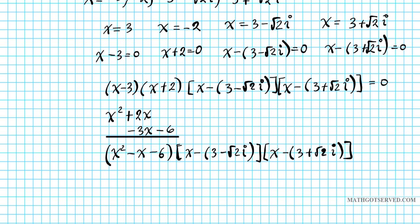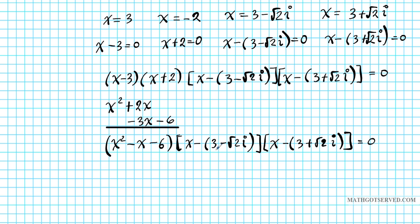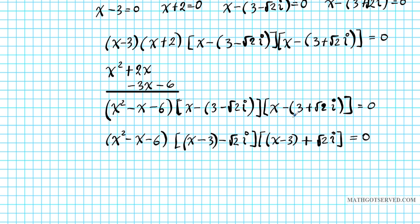So the first thing we're going to do is rewrite these two factors here with the complex radical. How am I going to write these two factors here? Well, instead of X minus this quantity I'm going to use the associative property to rewrite this as (X - 3) - √2i, and then the same process will be applied to this factor: (X - 3) + √2i = 0.